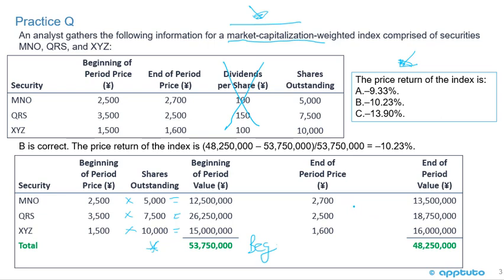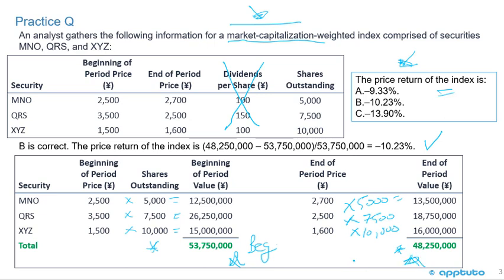Then we calculate the end of period market capitalization the same way — end of period price times the number of shares outstanding, for example 7,500 for one security and 10,000 shares outstanding for another. We sum up the end of period values, and then it's just ending minus beginning divided by the beginning. The correct answer is B: the price return of the index is negative 10.23%.